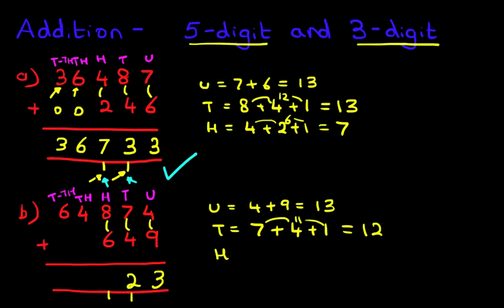Now we've got the hundreds column. Eight plus six. Don't forget the one we're carrying over. Eight plus six plus one. Well, eight plus six is 14, plus one is 15. Let's write that down. One here, five over here.